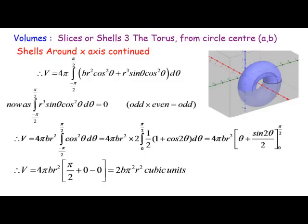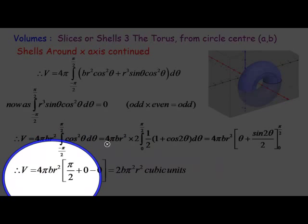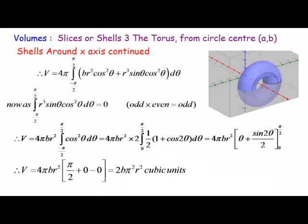This is the standard trig substitution for cos squared: ½(1 + cos 2θ). I've doubled up the integration from 0 to π/2 using the properties of even function integrals. After the substitution we get 4πBR² — we integrate 1 to get θ and cos 2θ to get sin 2θ/2. Evaluating this gives us 2Bπ²R² cubic units, as we got for slicing around the X-axis.